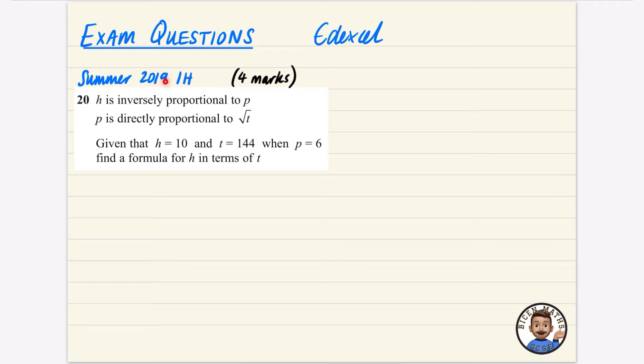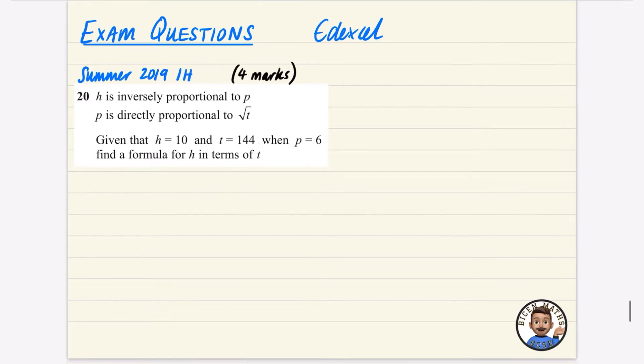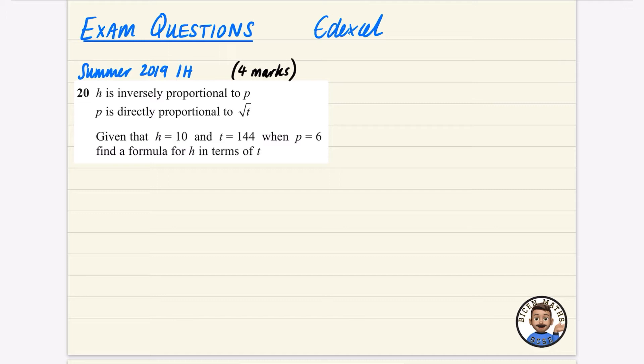And this first one was from the 2019 summer series, and it was from paper 1H. If it's paper 1, you know that means that it is non-calculator. So I'm going to do this question first of all like the slower way, and then I'm going to try the quicker way afterwards. I imagine most of you would probably think of it the slower way to begin with.